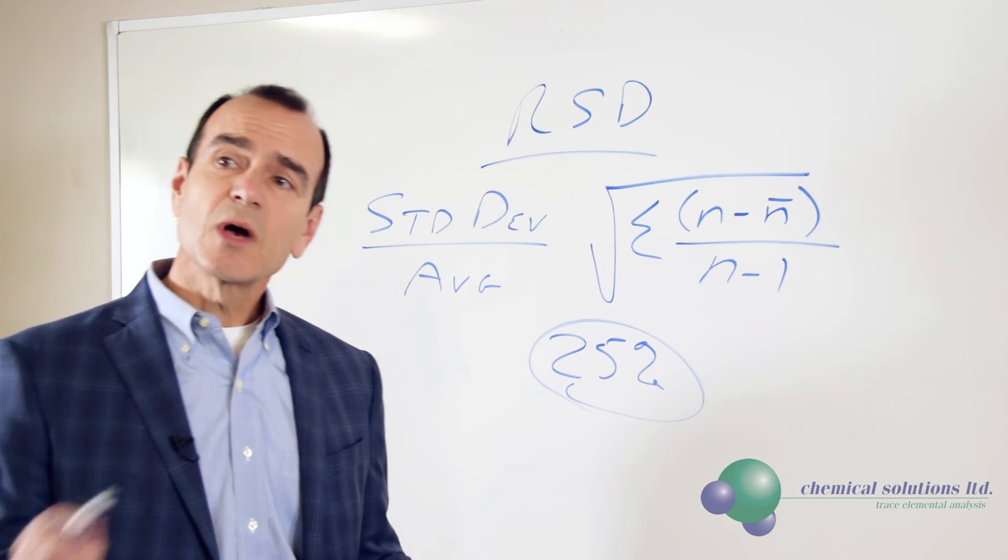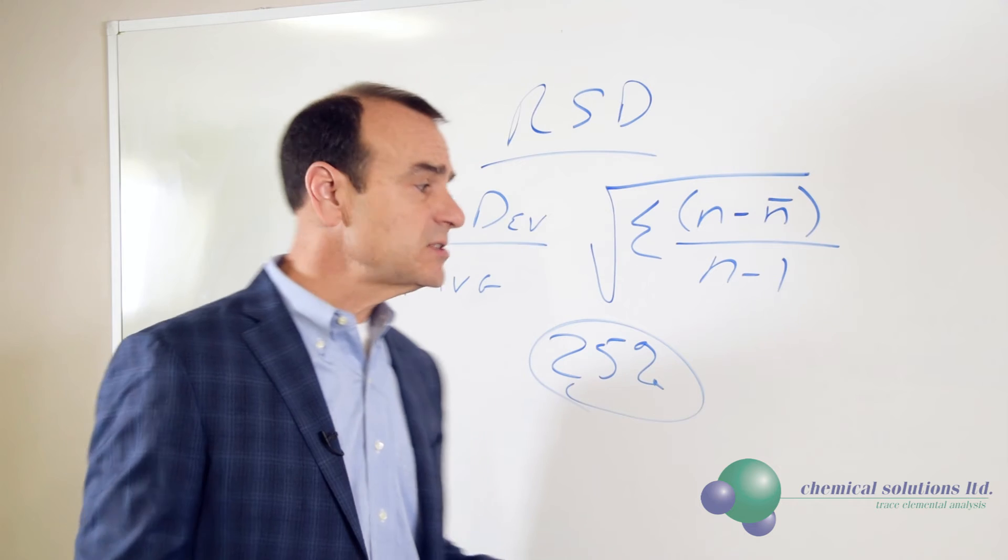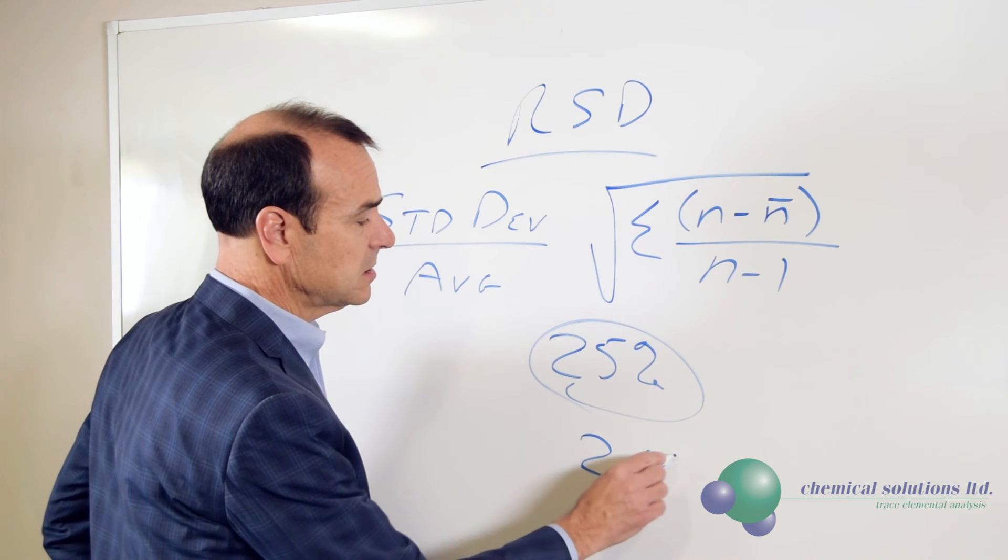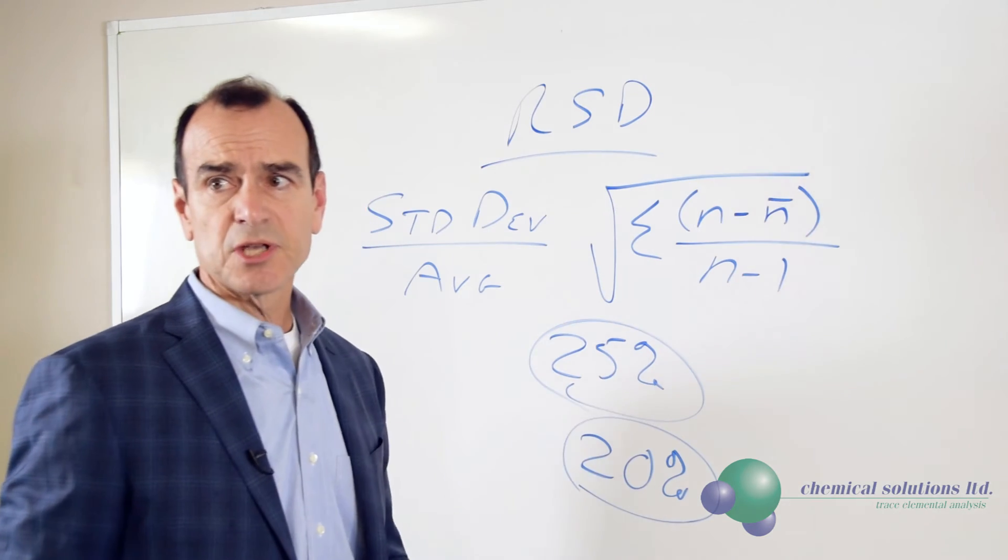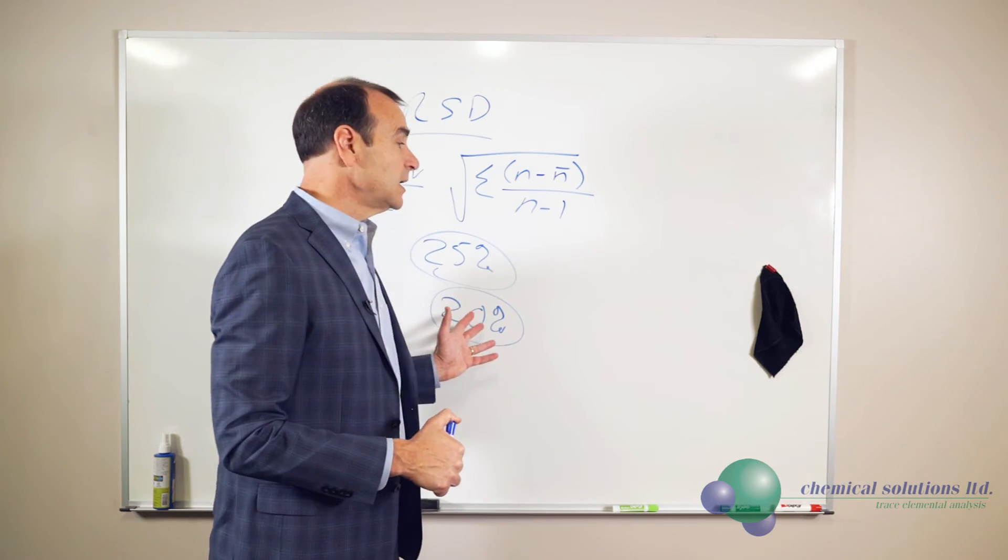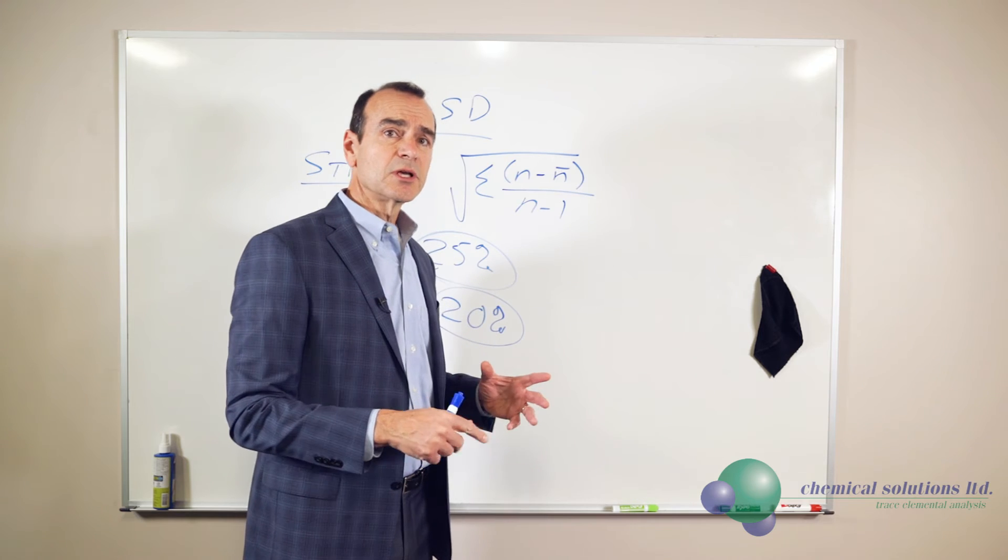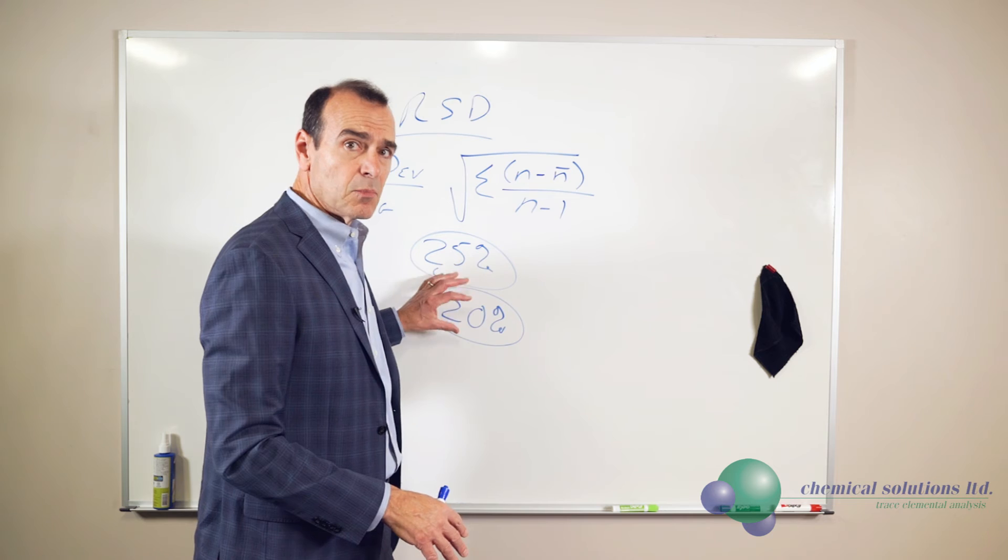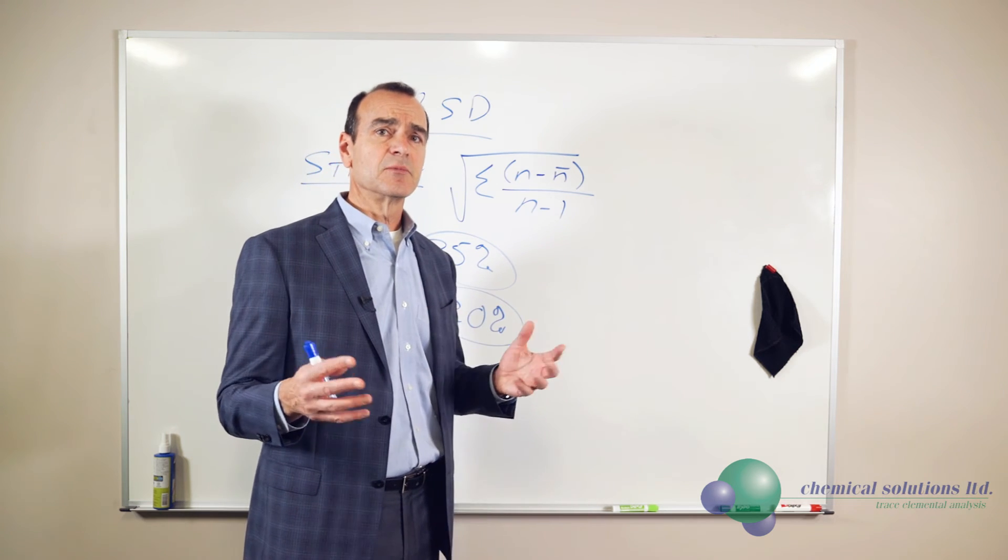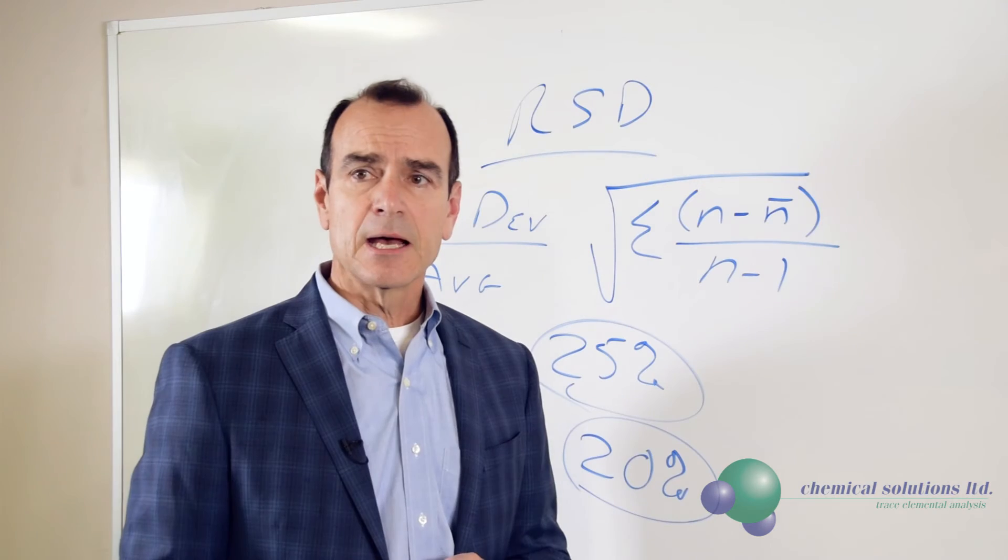Let's say the new USP-730 indicates that if you're doing a single element test, not multiple at the same time, then you would tighten that up a bit to 20%. If you're doing higher level elements, higher level as a percent in your product, you would want to tighten that up even more because there's a higher concentration of material that you're testing.